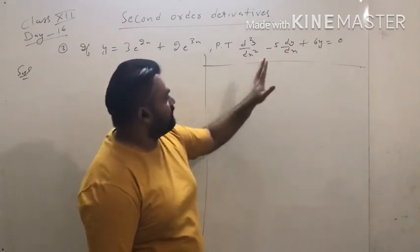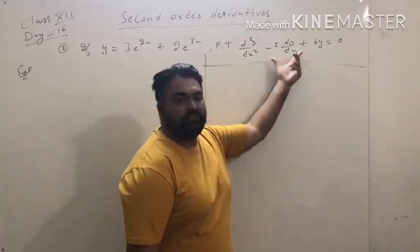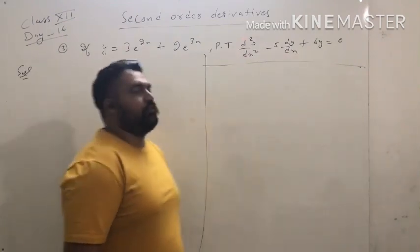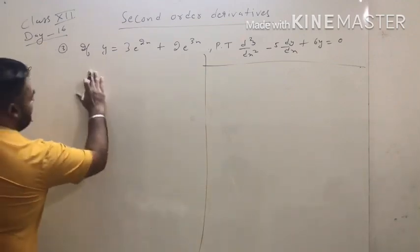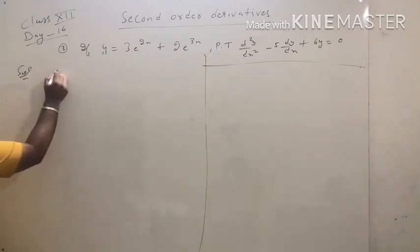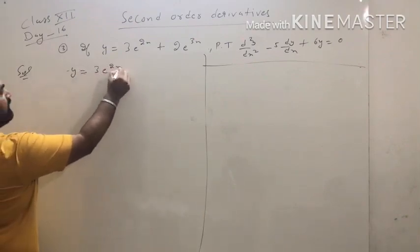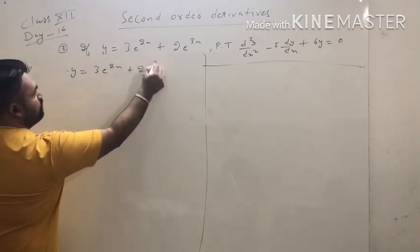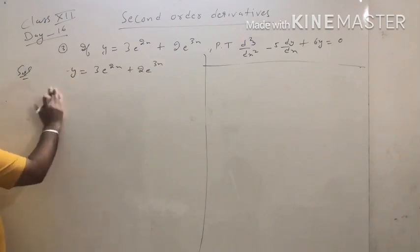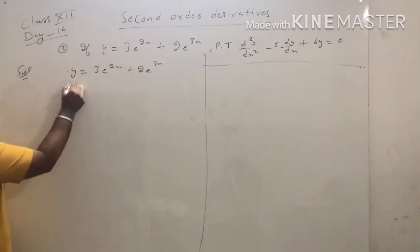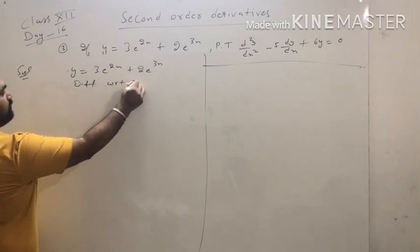In this question we have to show that the value of this equation equals 0. So firstly we will find the single derivative and double derivative. Solution: y equals 3e^(2x) plus 2e^(3x). Now differentiate with respect to x.